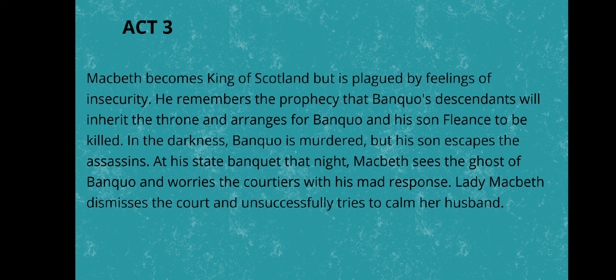Macbeth and his wife could not forget the prophecy of the sisters. They had said that Banco's children and not Macbeth's would be king. This rankled them incessantly. The two decided to murder both Banco and his son. They invited all the chieftains to supper in honour of Banco and his son, Fleance. Macbeth placed his men on the route that Banco was to take at night so that they could murder him. They stabbed Banco, but Fleance escaped.